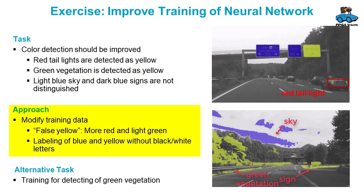What you can do is modify the training data. You can give more data that is not to be detected as yellow — so more red and more light green.